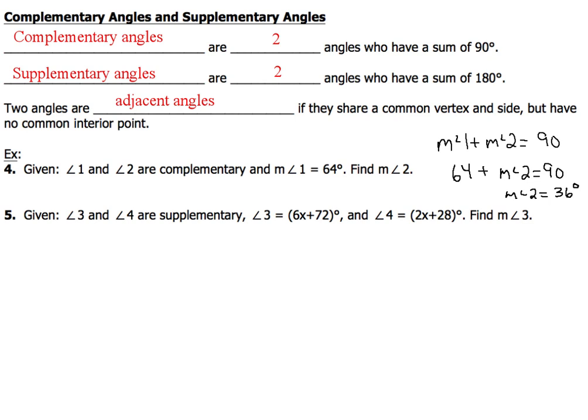Now, the word supplementary means 180 degrees. So that means angles 3 and 4, their sum is going to add up to 180. So, if you think you understand how to set this equation up,